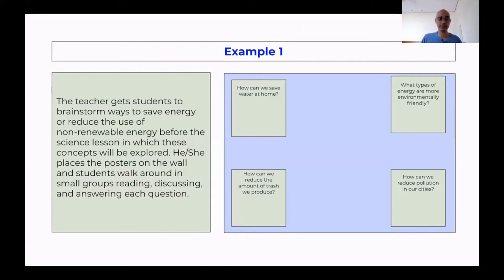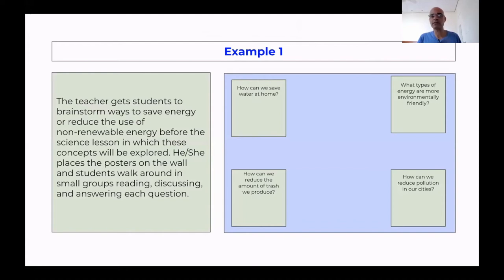Let's see one example. The teacher gets students to brainstorm ways to save energy or to reduce the use of non-renewable energy before the science lesson in which these concepts will be explored. The students haven't had the science lesson and may not even know what renewable and non-renewable energies are. But the point is to activate their experience with conserving energy or saving things at home, and then later connect that to the lesson objectives. That's one of the really good ways to use this carousel.